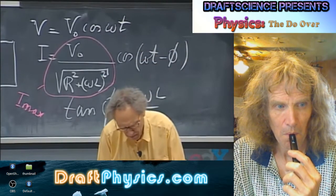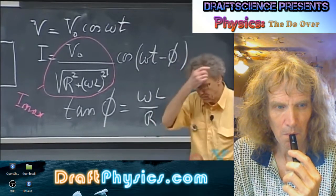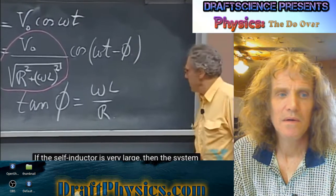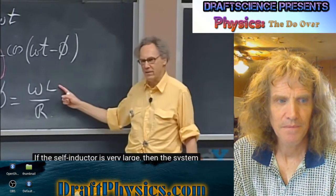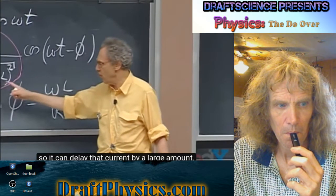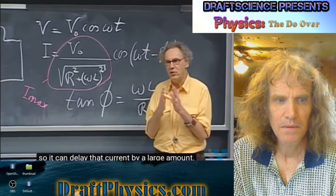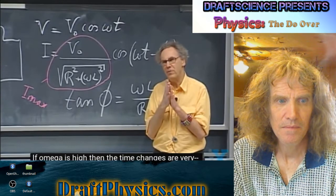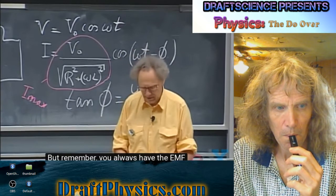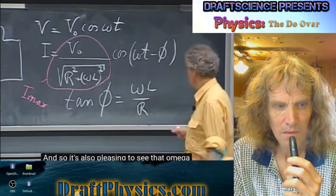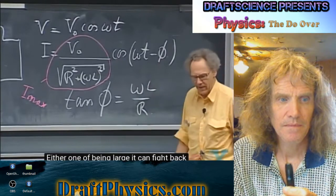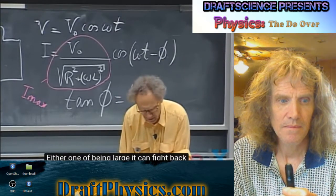Now let's look at the phase angle. The tangent of phi is omega L divided by R. If L is very large, the system has a strong ability to fight back, so it can delay the current by a large amount. The same is true if omega is high — time changes occur on a very small timescale and the system can fight back, since the EMF is proportional to dI/dt. It's pleasing to see omega and L are both upstairs.